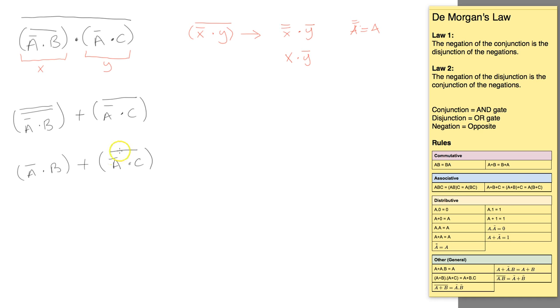Now we want to get rid of this not, so we're going to apply the same rule again as we did up here. We've got the negation of a conjunction, so we're going to go not not A or not C.